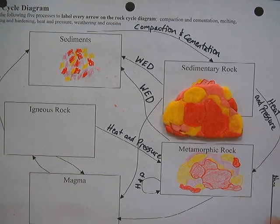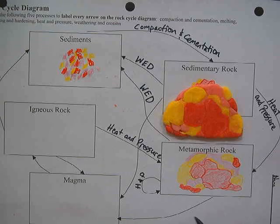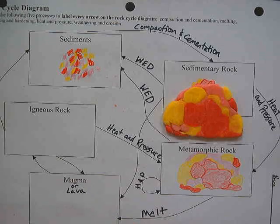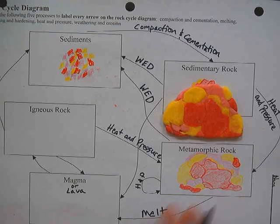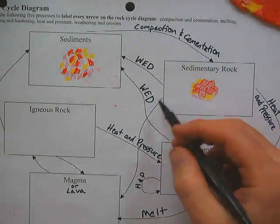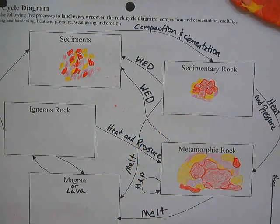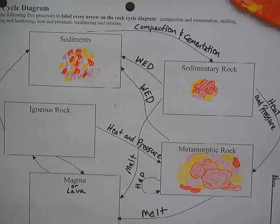We have one last type of rock to create — an igneous rock. Before it can become igneous, the rock has to go through the melting process and turn into magma or lava. Both the metamorphic rock and the sedimentary rock can melt to form the magma or lava needed to create an igneous rock.